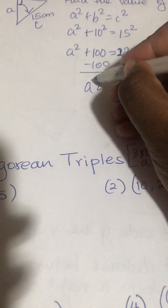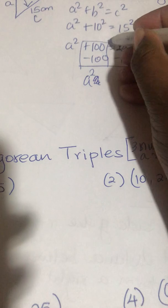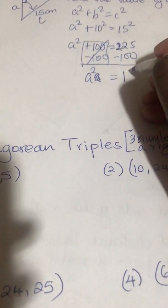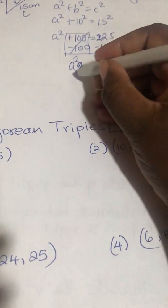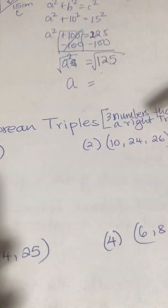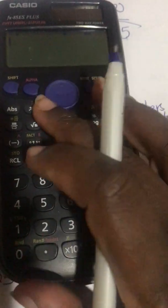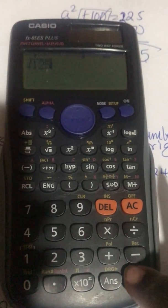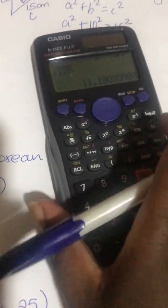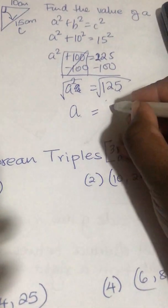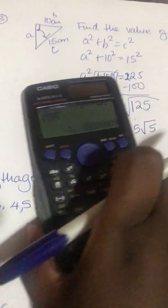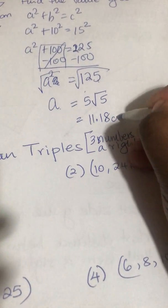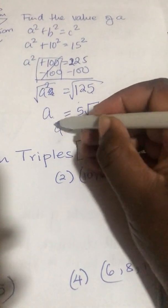225 minus 100 equals a squared. a squared equals 125. Do the square root of both sides: square root of a squared is a, square root of 125. You can leave it as 5 root of 5, or press SD to get the decimal. Round to the nearest hundredth — so a equals 11.18. Put the units because the question gave you units. That is your answer.